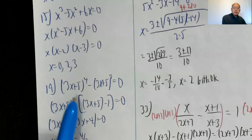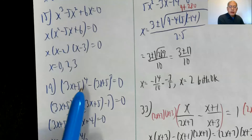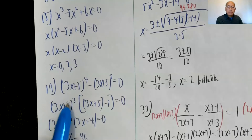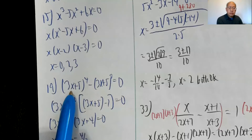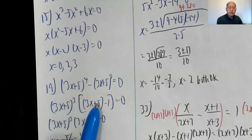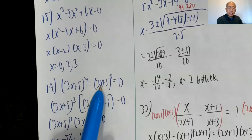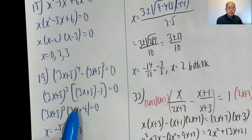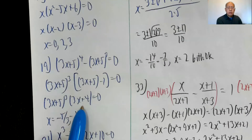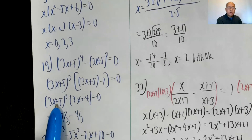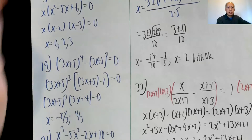Problem nineteen: you have three x plus five to the fourth minus three x plus five to the third. Factor out a three x plus five cubed. This leaves one more three x plus five minus one, which gives three x plus four. So either this is zero, where x is negative five thirds, or this is zero, giving negative four thirds.